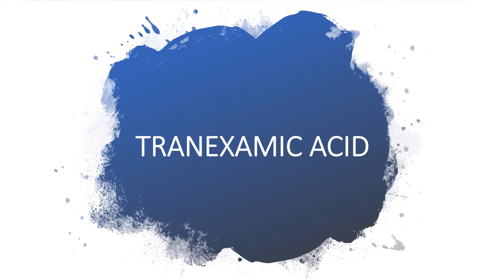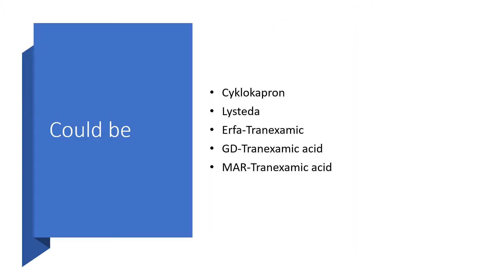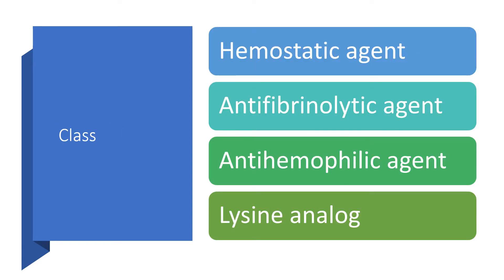Welcome to my channel. I'll be talking about tranexamic acid. Tranexamic acid can come under different brand names such as cyclokapron. It belongs to the class of medications known as hemostatic agents, antifibrinolytic agents, anti-hemophilic agents, or lysine analogs.